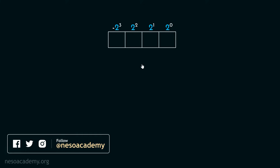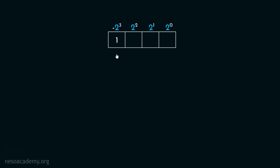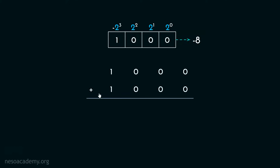Let me illustrate. With 4 bits in 2's complement form, if we place 1 in the MSB's place and keep zeros in the remaining places, we acquire the value minus 8. This is the pattern used to represent the magnitude minus 8. Now suppose we would like to add two negative 8's — in this addition, these three places will remain zeros, and 1 plus 1 gives us 1 0.